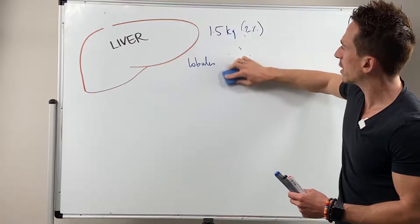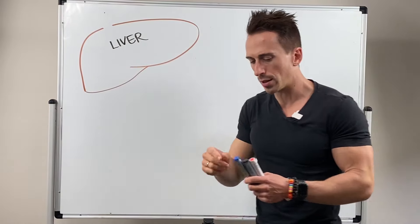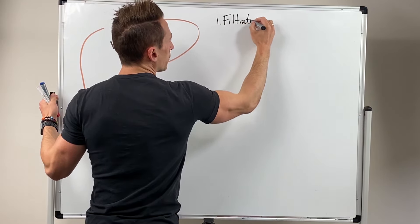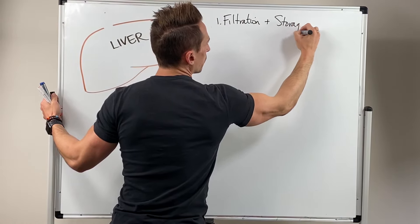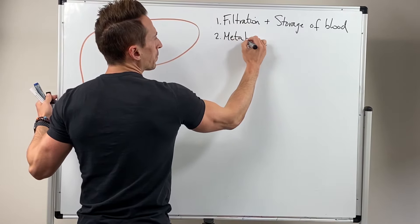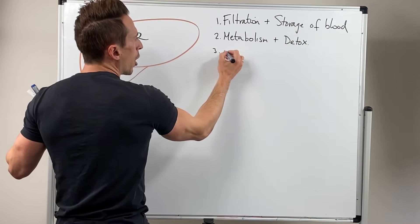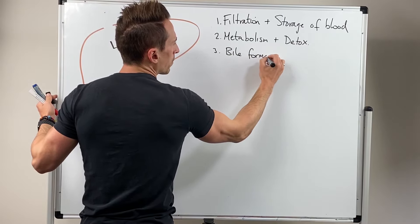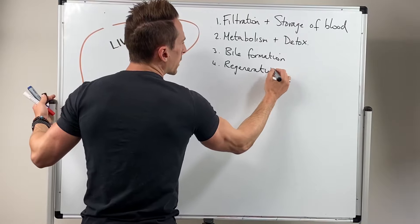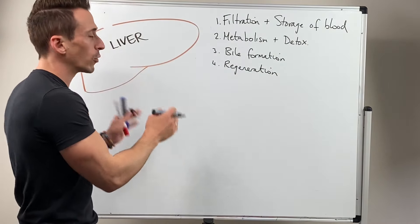When we look at the liver and all of its functions, you can broadly categorize them under four main categories: filtration and storage of blood, metabolism and detoxification, bile formation, and regeneration. There are multiple subcategories of functions that fit underneath each of these, which we'll be discussing today.